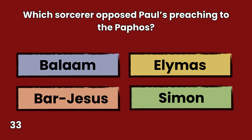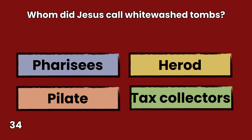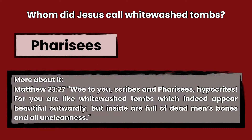Question 34: Whom did Jesus call whitewashed tombs? Pharisees, Herod, Pilate, or tax collectors? Answer: Pharisees. Matthew 23:27 — Woe to you, scribes and Pharisees, hypocrites! For you are like whitewashed tombs, which indeed appear beautiful outwardly, but inside are full of dead men's bones and all uncleanness.